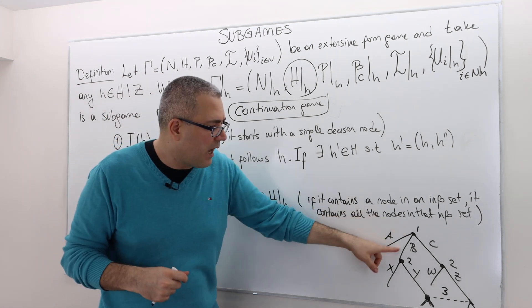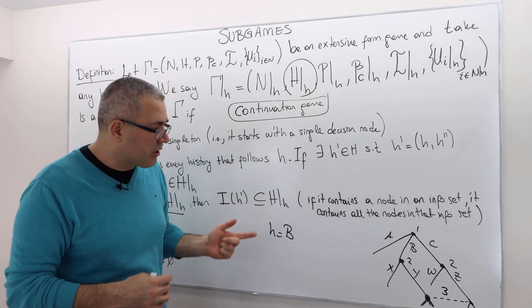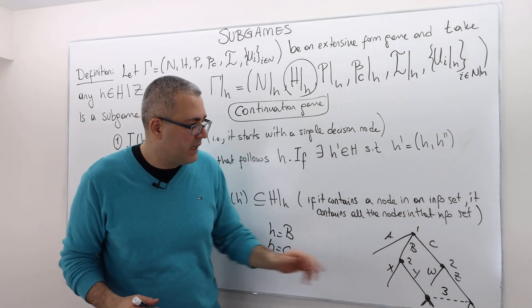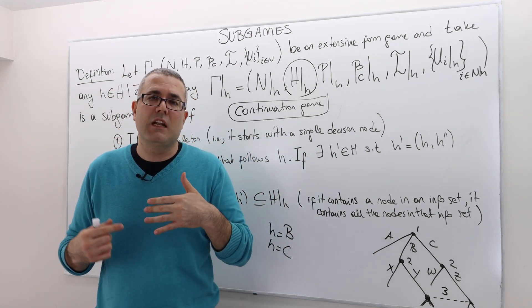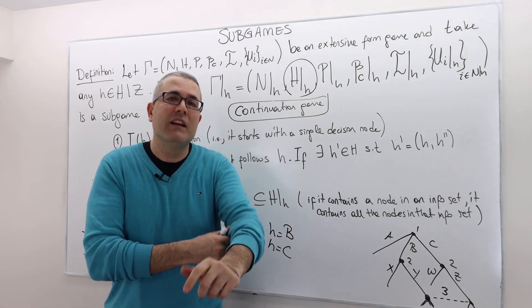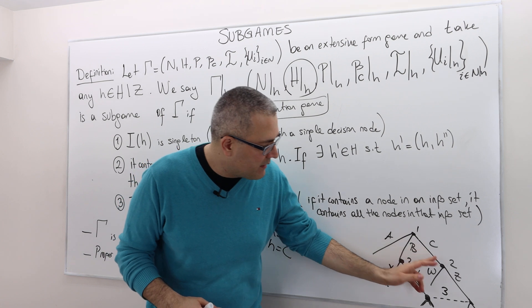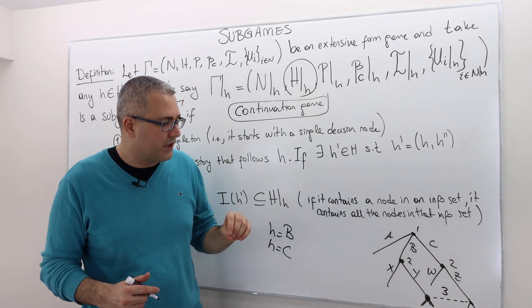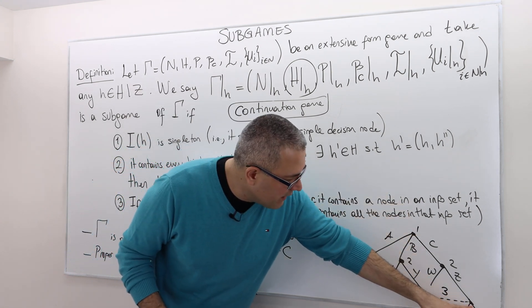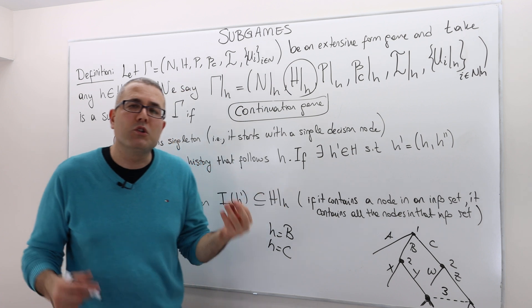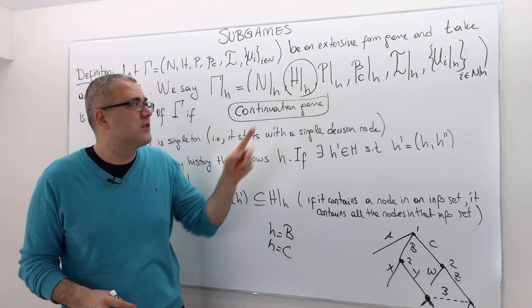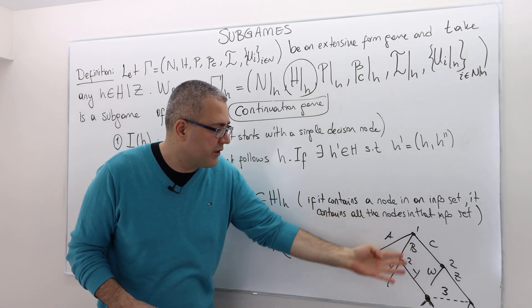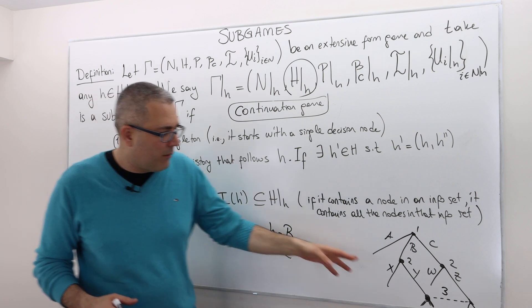Similarly, you cannot create a subgame after history C. Why? Well, once again, because if history is C, all the following histories, all the histories that follow C must be there. And in fact, that should be the only histories in there. So that means C-Z is also in the set, C-Z and continuation, whatever the rest of the actions or histories are. But the thing is, because it is also in the same info set with B-Y, B-Y must also be in the same info set. But B-Y cannot be in the set because it is not a continuation of history C. So you got the idea, probably, if this is the game.